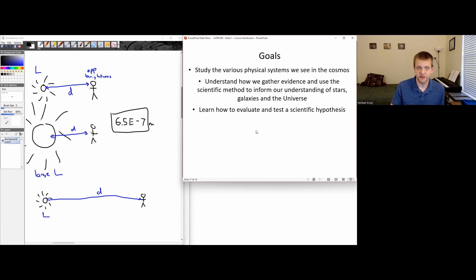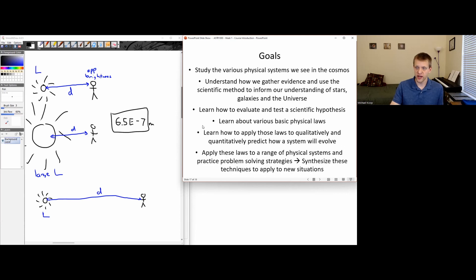So we're going to be talking a lot about the scientific method and seeing how that can be applied to increase our understanding of all these different kinds of objects. We're going to learn how to evaluate and test scientific hypotheses. We're going to learn about the basic physical laws that seem to govern the universe, laws like conservation of energy, laws of gravity, laws of how light interacts with matter. And we're going to apply those laws, both qualitatively and quantitatively, to understand the properties of different systems, to try to come up with models, to predict how those systems will evolve. Eventually we're going to be getting to the point where we're going to be able to take these key concepts and apply them to new novel situations, practicing problem-solving strategies.